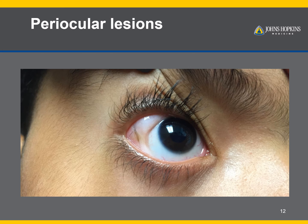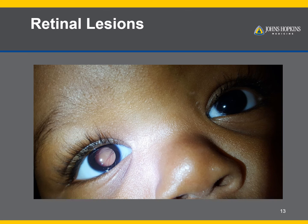Lesions on the surface of the eye or around the eye can also lead to deprivation amblyopia, especially if they encroach or block the line of sight. This is an example of a dermoid on the eye, commonly seen with dermal tissue such as hair follicles. Lesions on the retina itself can also lead to deprivation of vision — this can include hemorrhages, residual fetal vascular tissue, or tumors. This is an example of a retinoblastoma, a tumor of the retina.